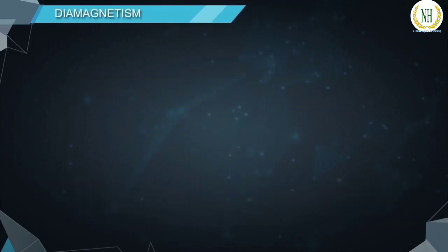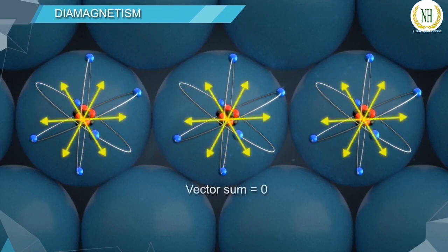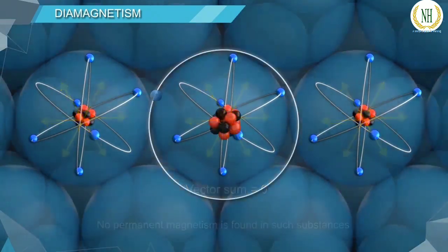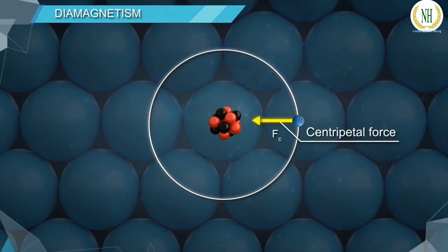In diamagnetic materials, the atoms contain fully filled paired electron orbitals. The vector sum of magnetic dipoles of all orbital electrons is zero; hence, no permanent magnetism is found in such substances. At the atomic level, the electrons revolve around the nucleus due to the centripetal force acting on it, directed towards the center. The velocity of the electron depends on the magnitude of this centripetal force.